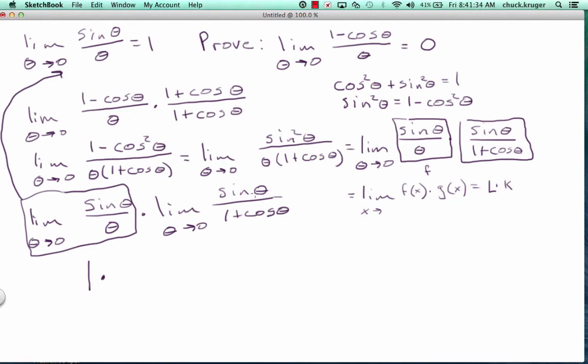Times, now in here I can do direct substitution. So I have the sine of 0 over 1 plus the cosine of 0. So this is equal to, I'm going to multiply this by 1, it's not going to change anything. 0, that's what the sine of 0 is, over 1 plus 1. Well, this is 0.